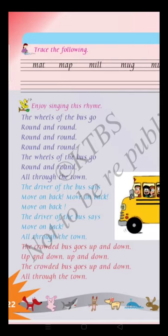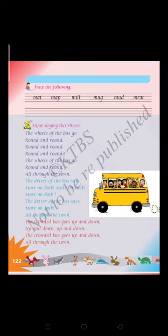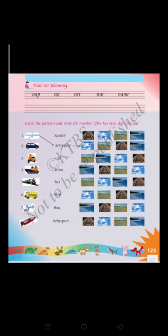The wheels of the bus go round and round, round and round, round and round. The wheels of the bus go round and round, all through the town. The driver of the bus says move on back, all through the town. The crowded bus goes up and down, all through the town. Dear students, this is the rhyme - how the bus goes round and round, moves on back, and the crowded bus goes up and down.